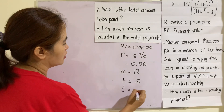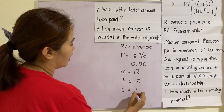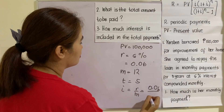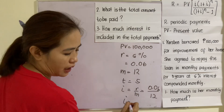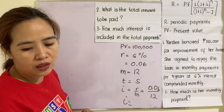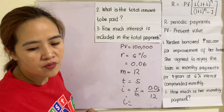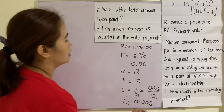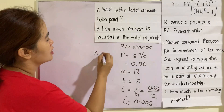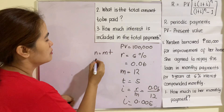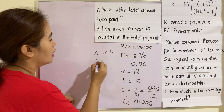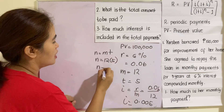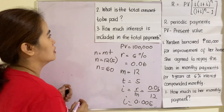We can now solve for i, which is equivalent to the annual rate divided by m. This is 0.06 divided by 12, giving us i equals 0.005. And n equals m times t, so n equals 12 times 5, which gives us n equals 60.